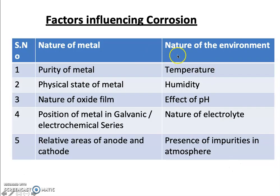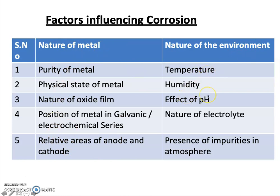Factors influencing corrosion: the nature of the metal and the nature of the environment. Under nature of metal: purity of the metal, physical state of the metal, nature of the oxide layer, position of the metal in the galvanic or electrochemical series, and the relative areas of anode and cathode. Environmental factors include: temperature, humidity (moisture), pH of the environment, nature of the electrolyte, and presence of impurities in the atmosphere.